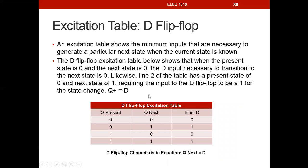Previously, when we studied the flip-flops, we developed the characteristic equation that said Q in the next state — Q is the output of the flip-flop — is equal to D, which is the input to the flip-flop. Meaning, on a clock edge, we have the transition of the flip-flop from the present state to the next state. So whatever is on D when we have that clock edge, Q next will be stored into the flip-flop's memory and come out as the output Q.